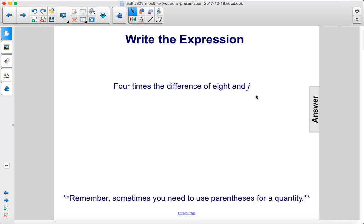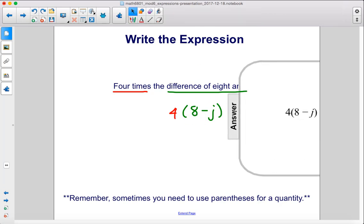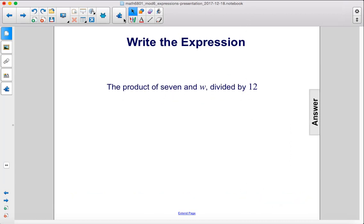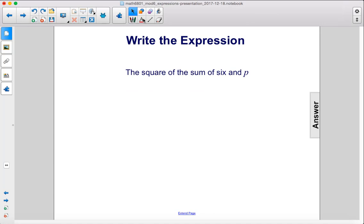4 times the difference of 8 and j. Here it says, remember, sometimes you need to use parentheses for quantity. So we want 4 multiplied times the difference of 8 and j. The first thing we're going to do is find the difference of 8 and j, so 8 minus j, and then 4 times that. So 4 multiplied times that difference. The product of 7 and w divided by 12. So we're going to have a product of 7 and w and then divided by 12. The square of the sum 6 and p. So first we take the sum of 6 and p, and then we square it.